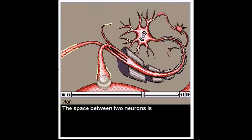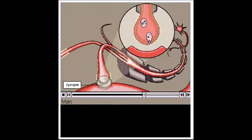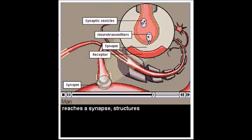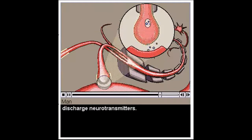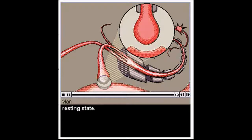The space between two neurons is called a synapse. When the electric impulse reaches a synapse, structures called synaptic vesicles discharge neurotransmitters. These chemicals ferry the electric impulse to the next neuron. The first neuron returns to a resting state. Potassium and sodium ions begin to change places in the second neuron, and the electric impulse passes on to the next neuron.